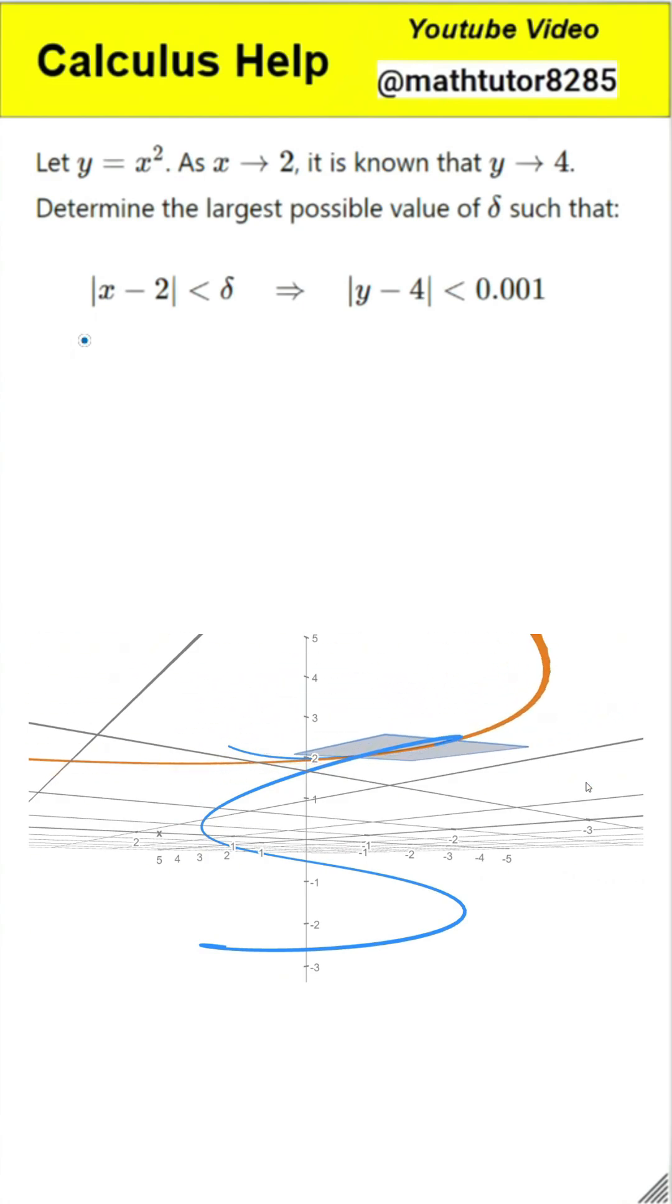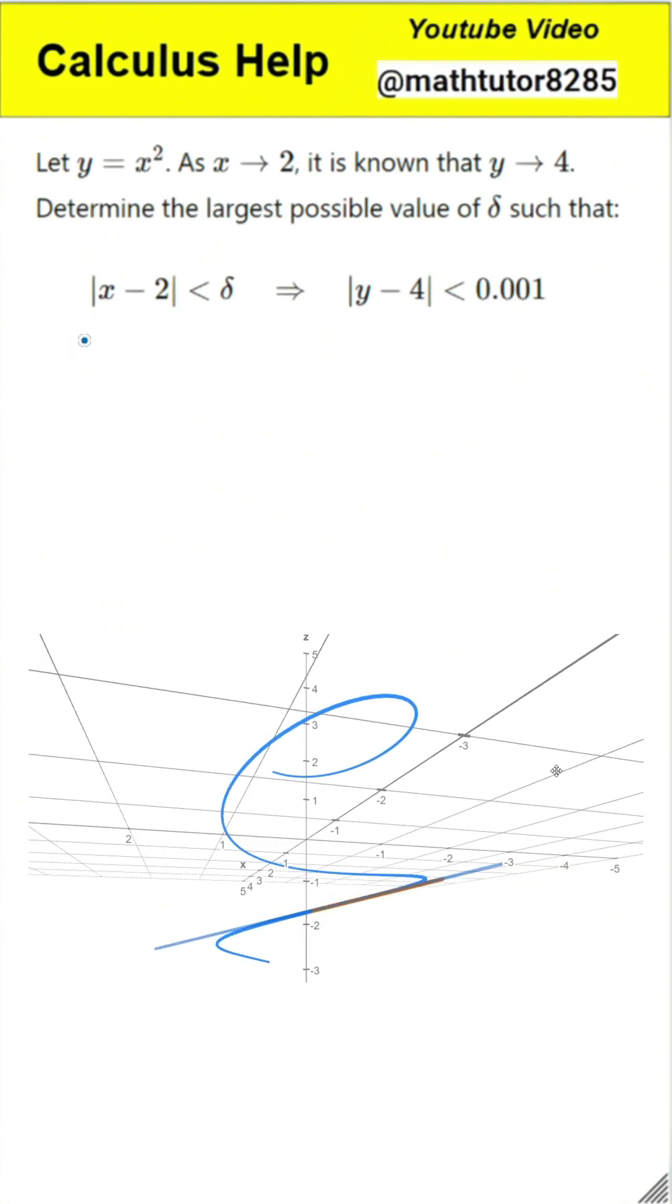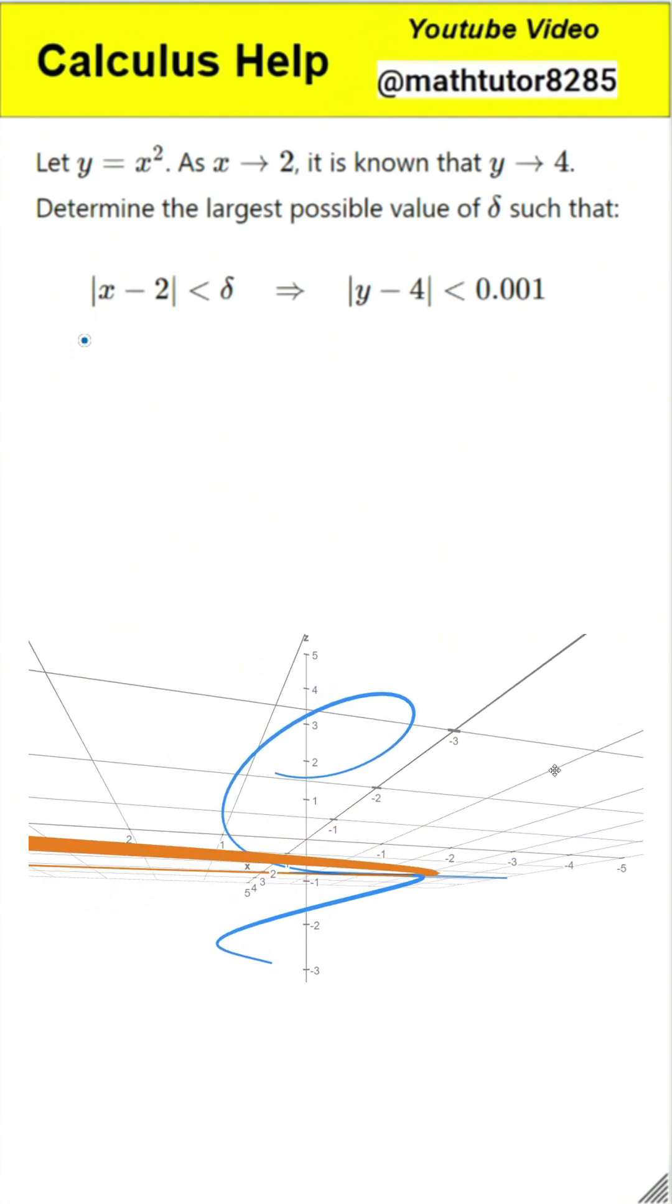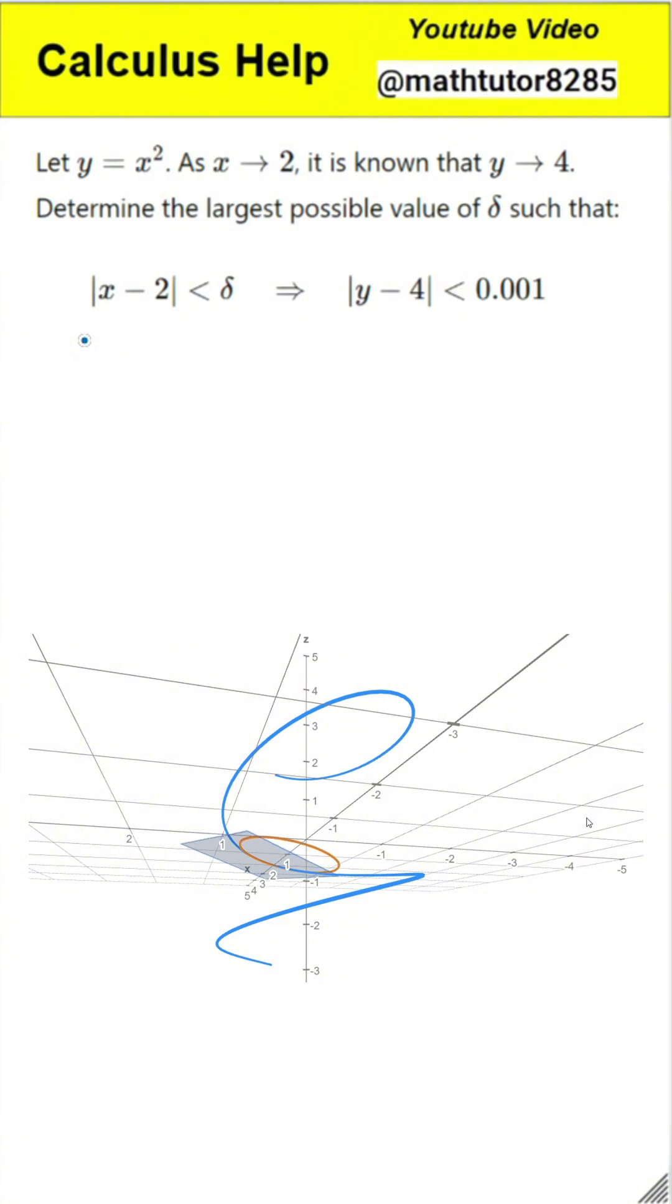Our task is to find a value called delta such that if the distance between x and 2 is less than delta, then the distance between y and 4 is guaranteed to be less than 0.001. This is a classic case of applying the epsilon-delta definition of a limit.